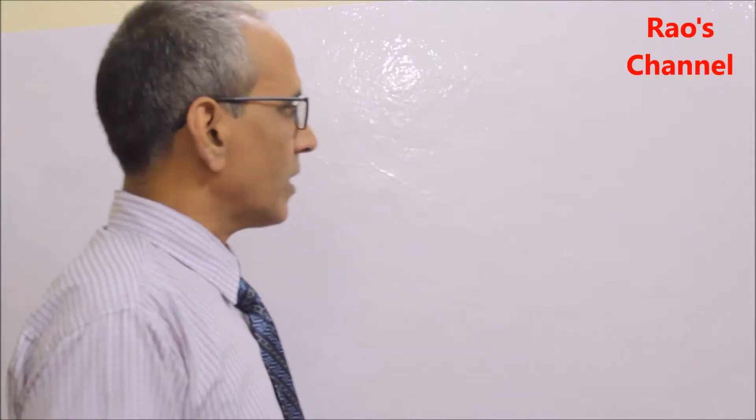Hello, welcome to Rose Channel. My dear students, today I explain how to add or subtract a pair of unlike fractions. Unlike fractions are fractions where the denominators are not the same — it may be a pair or a group; we call them unlike fractions.